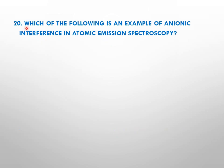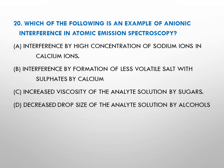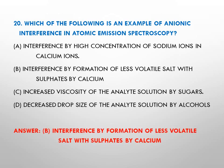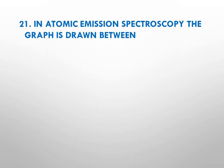Question number twenty: which of the following is an example of anionic interference in atomic emission spectroscopy? Options: A interference by high concentration of sodium ions in calcium ions, B interference by formation of less volatile salt with sulfates by calcium, C increased viscosity of the analyte solution by sugars, D decreased drop size of the analyte solution by alcohols. The right answer is B — interference by formation of less volatile salt with sulfates by calcium.